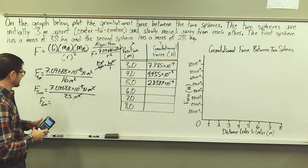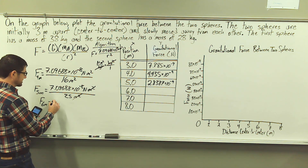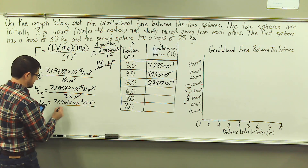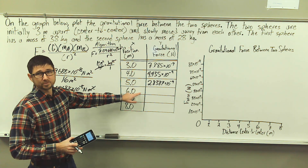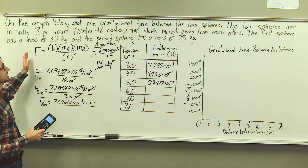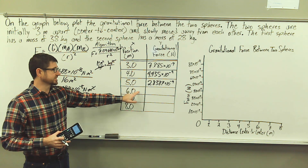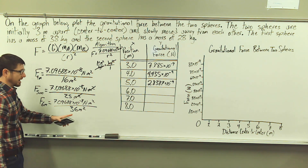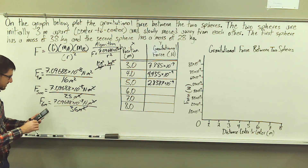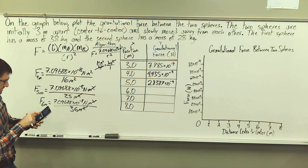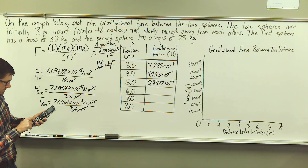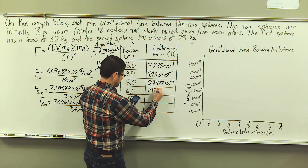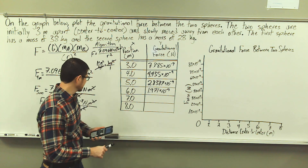We can calculate the force of gravitational attraction when the center-to-center distance is 6 meters. Remember, we're using our algorithm, and this is an inverse square relationship. Six meters squared is 36 meters squared. The units of meters squared cancel, giving us 1.971 times 10 to the negative ninth newtons.